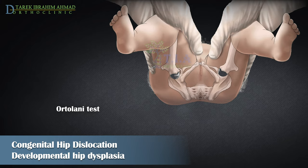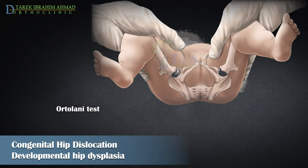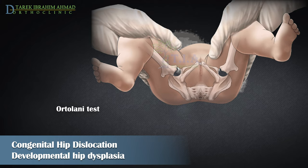If the joint is dislocated, a palpable clunk is noticed as the head slides out of its place. Ortolani's sign is exactly the opposite — it is a test for dislocated hip reduction. When a newborn with a dislocated hip is examined, the femoral head is reduced into the acetabulum through the maneuver. It is performed with the child in dorsal decubitus, with hips and knees at 90 degrees flexion and thighs in adduction with slight internal rotation. During hip abduction, possibly with slight external rotation, a palpable clunk is noticed as the head slides into place — this is a positive Ortolani sign.